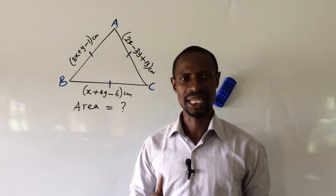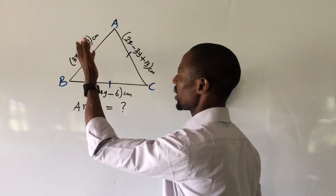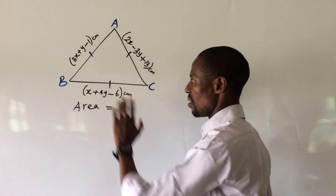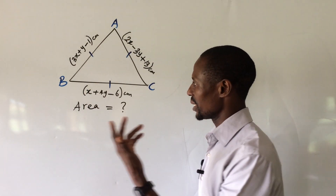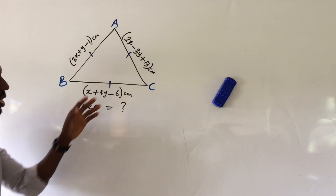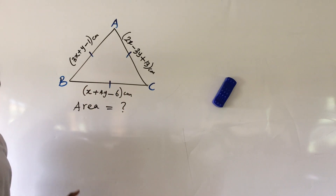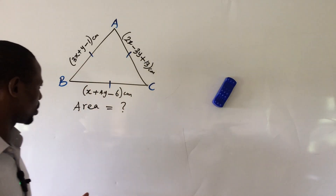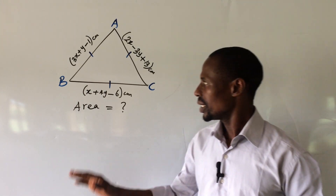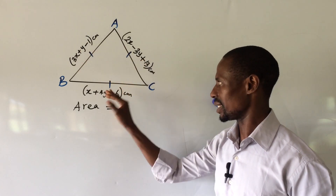In other words, all the sides are equal. So how do we solve or get the actual values? Of course each expression will give us the same value. The question asks: what would be the area of this equilateral triangle? But before we can calculate the area, we first need to solve for the length of each side.